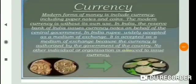Currency: the modern forms of money include currency, paper notes, coins, and similar things used as money. Modern currency is not made of precious metals such as gold, silver, and copper. Unlike the barter system using grain and cattle, modern currency items are neither of everyday use nor for exchange of goods — the modern currency is without any use of its own.